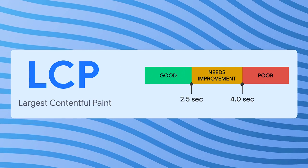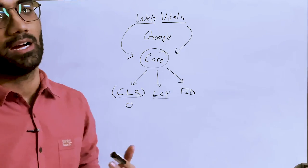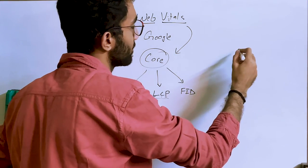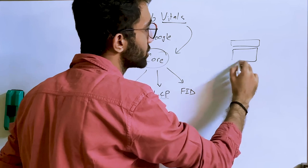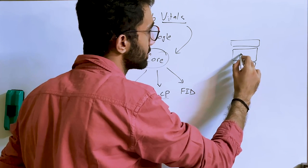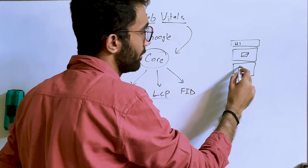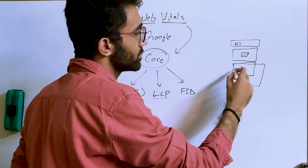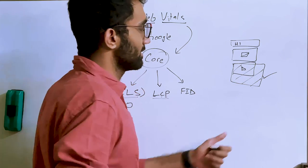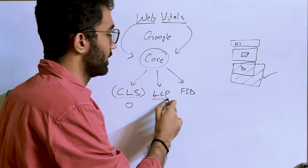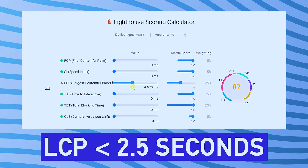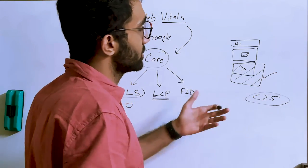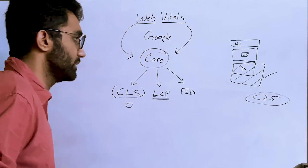The second Core Web Vital is Largest Contentful Paint, which measures how fast the largest part of your page gets rendered. For example, if you have a heading, an image tag, and a video tag, and the video is the largest element, the time it takes to render that area and make it visible is the LCP time.